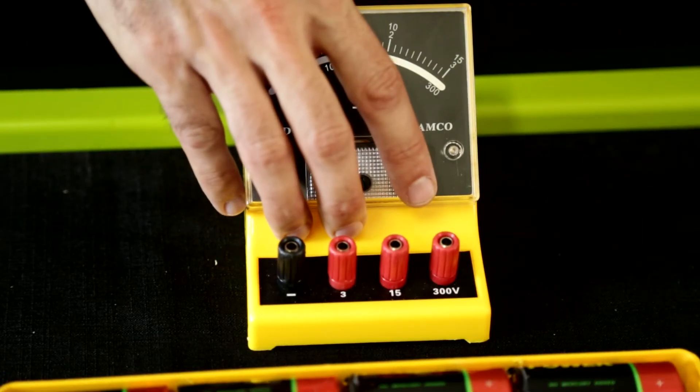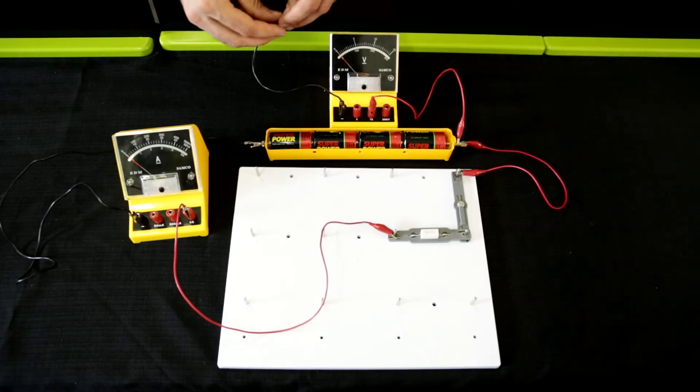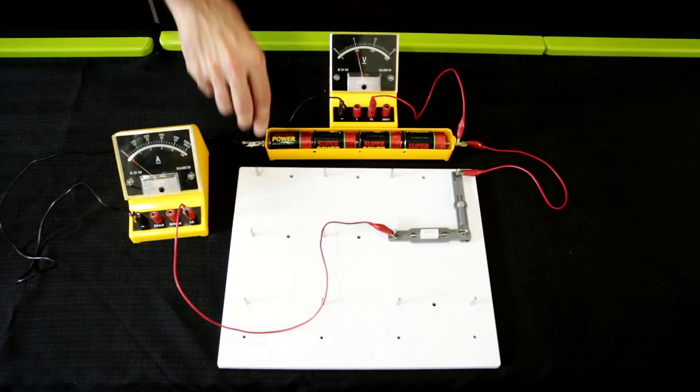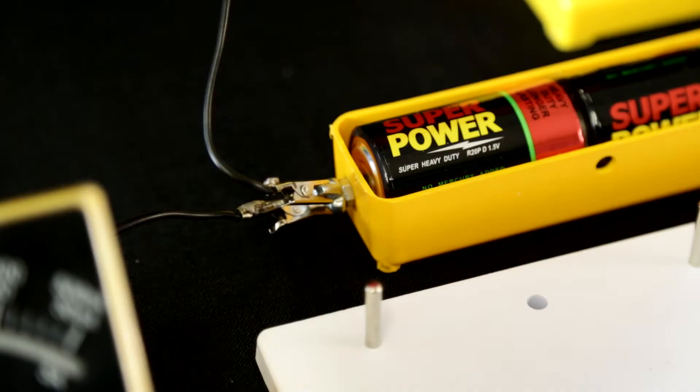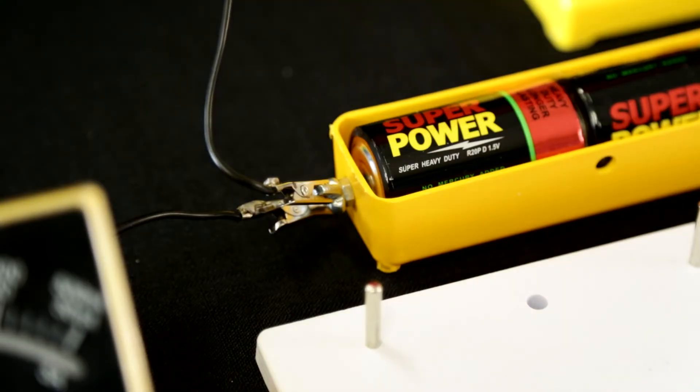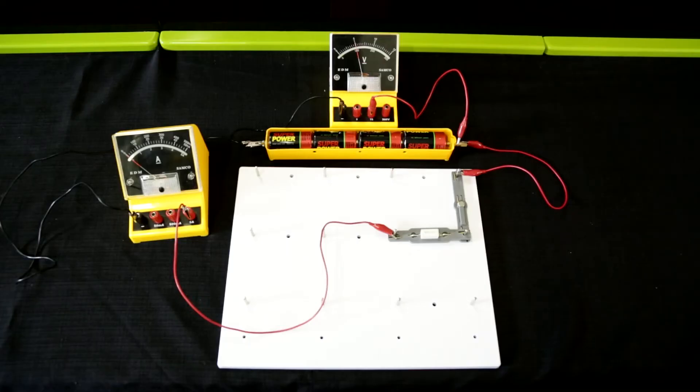Now connect the voltmeter in parallel across the end terminals of the battery, making sure that the positive terminal is connected to the red positive plug in the voltmeter, and the negative terminal is connected to the black negative plug in the voltmeter.